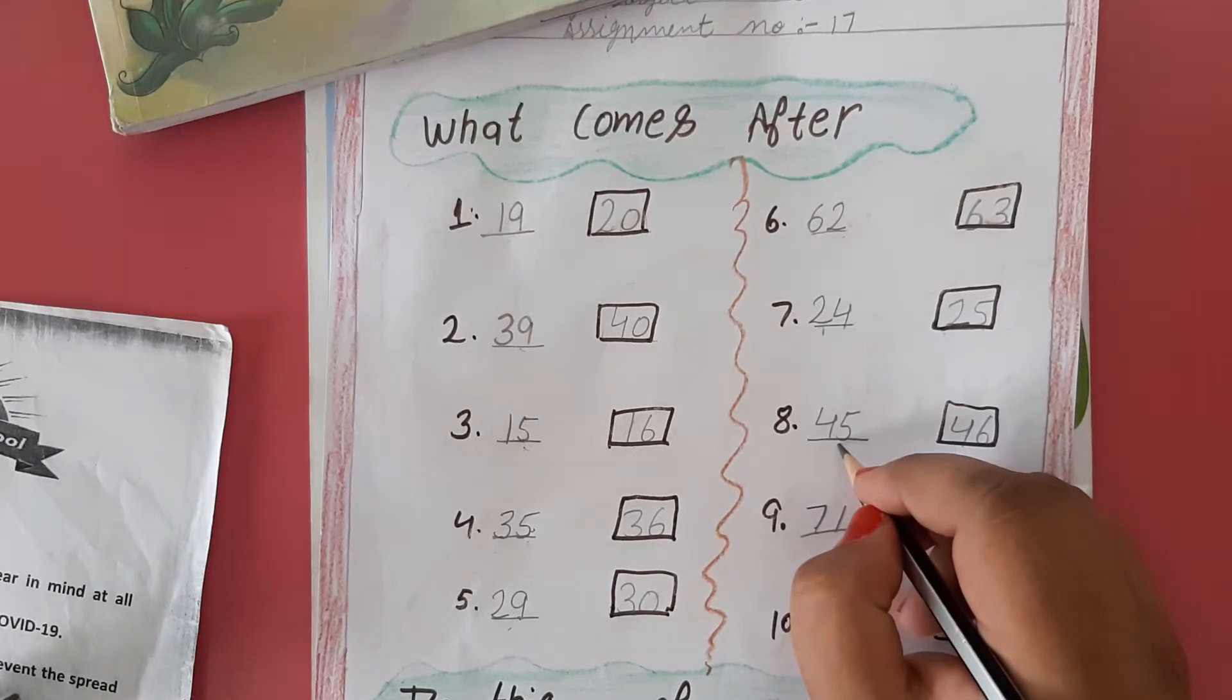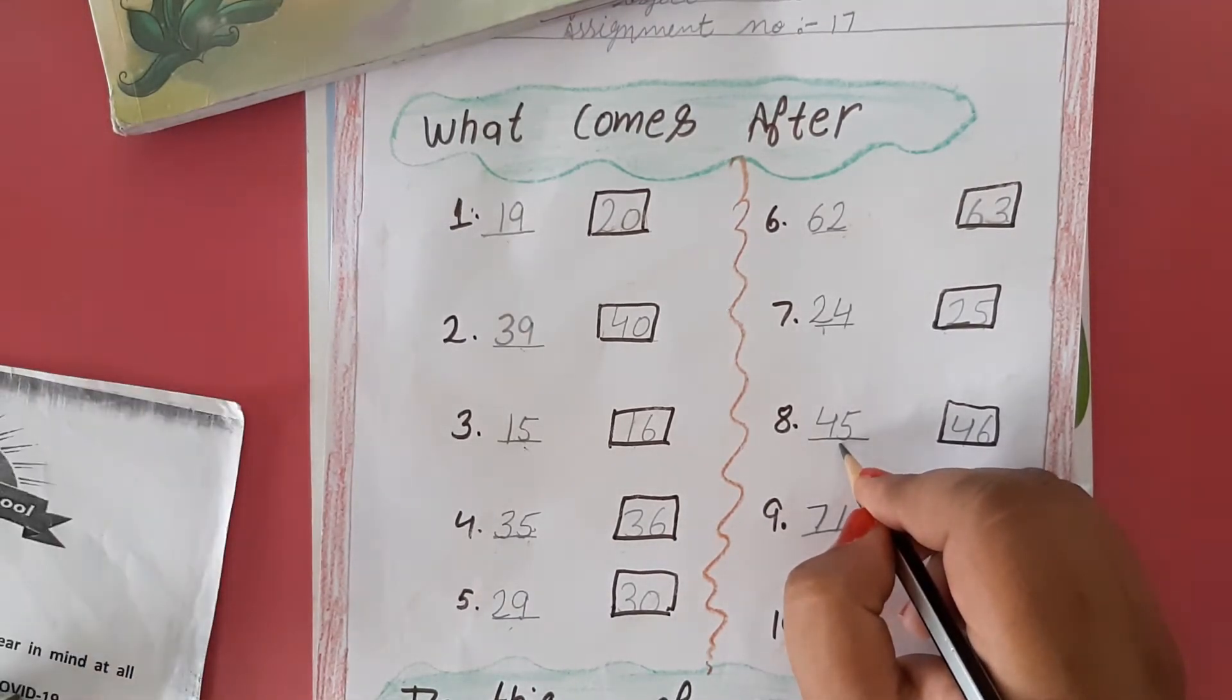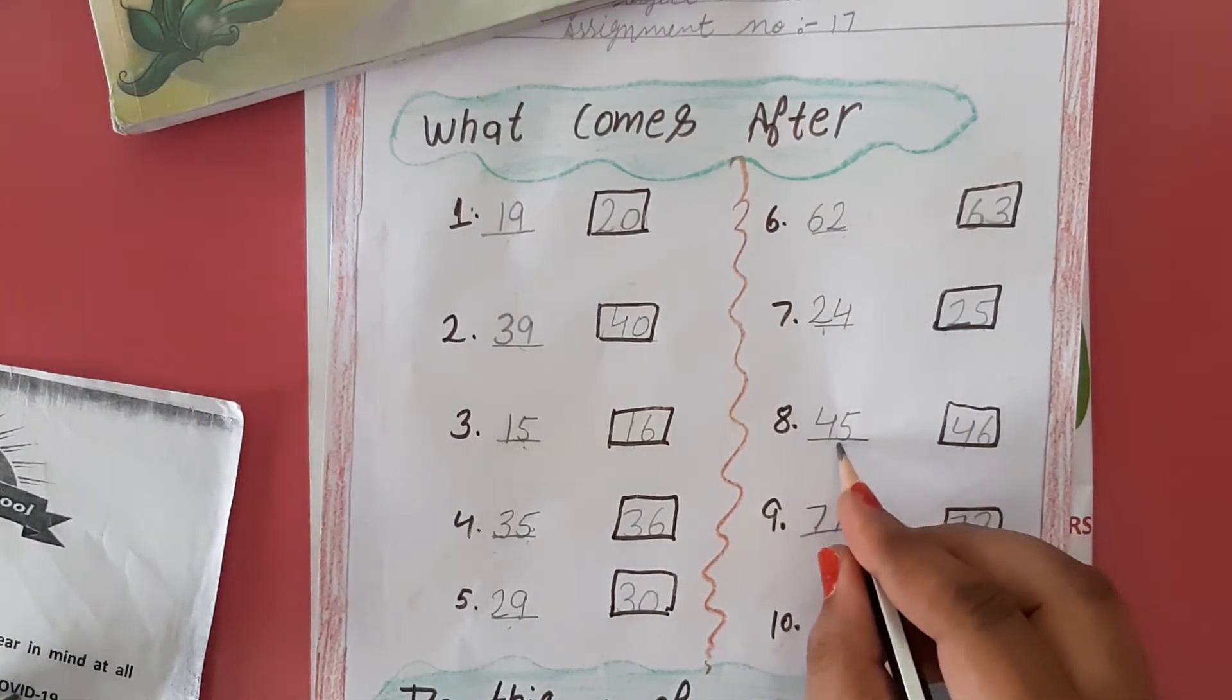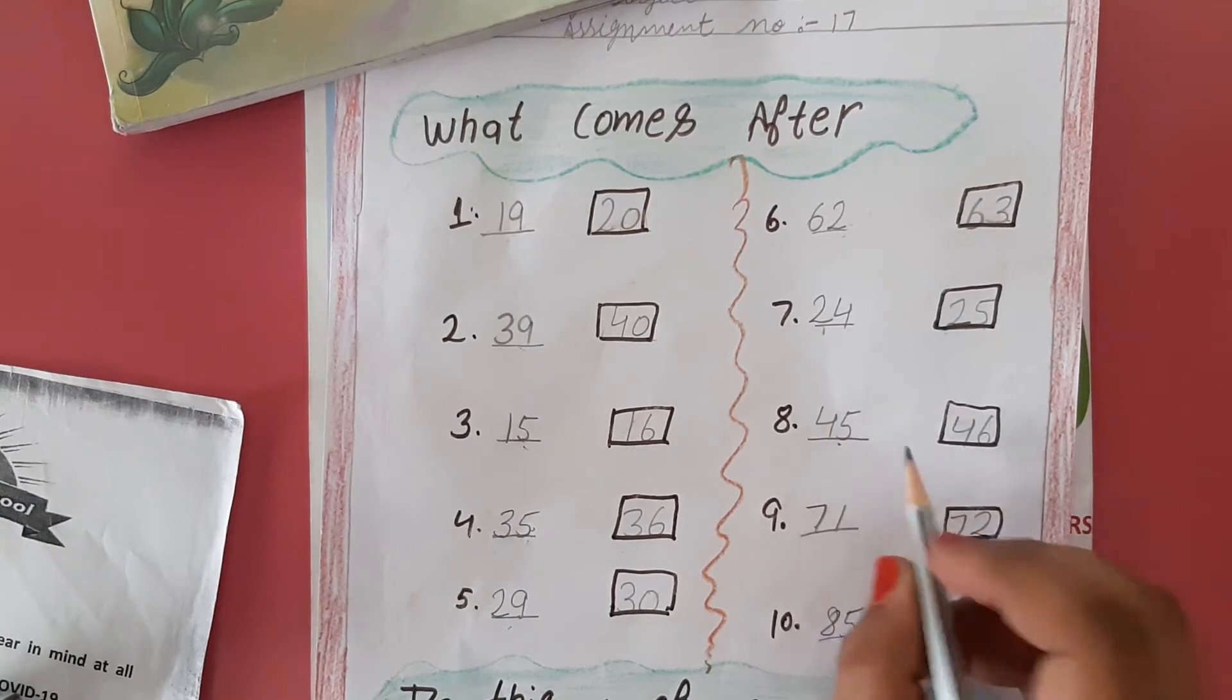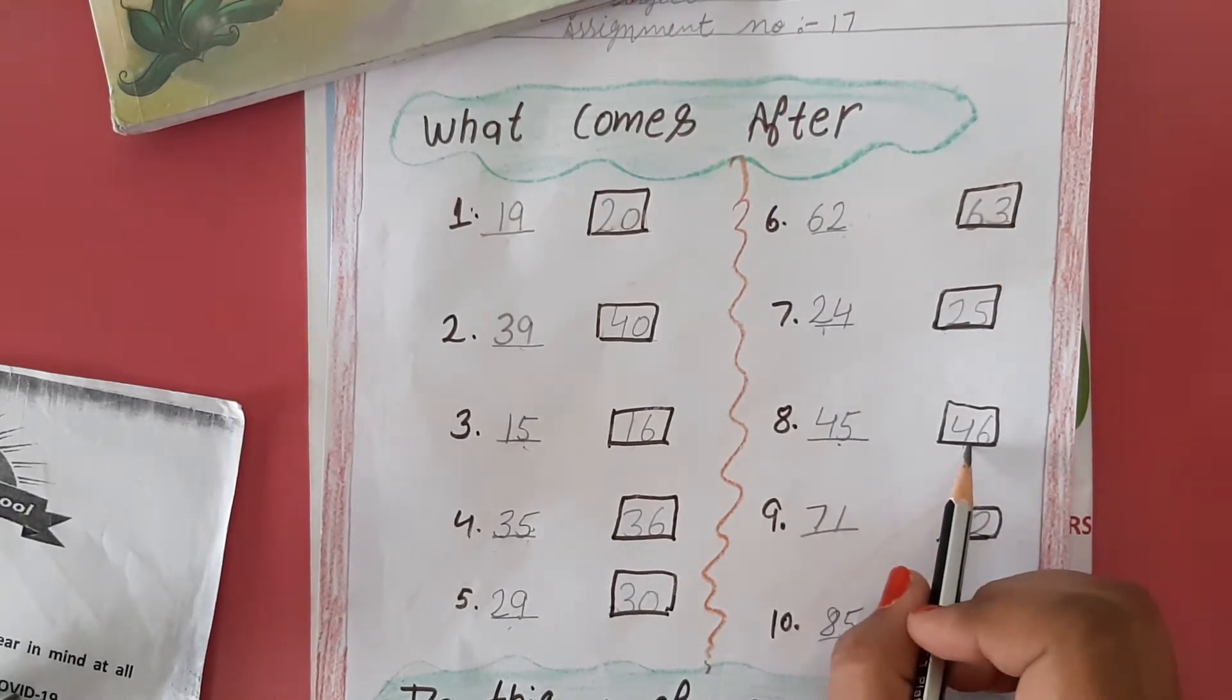Here, 45 is given. What comes after 45? That is 46, so we will write here 46.